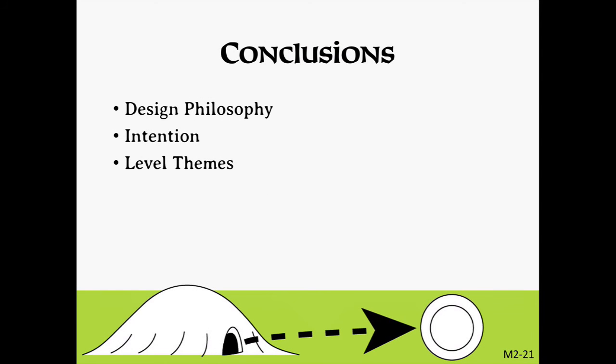In this module, we learned about the first of the Three I's: intention. We learned how important it is for designers to have clear intentions as they approach their work, and we put special focus on making sure that you are clear about your intentions at the start of the design process, by outlining a set of questions you can use as an exercise to help refine your own designs. Finally, we learned about the concept of level themes — proven solutions for commonly encountered challenges in level design. As always, be sure to bring your questions over into the Facebook forums or email me directly. I'll see you in the next module.